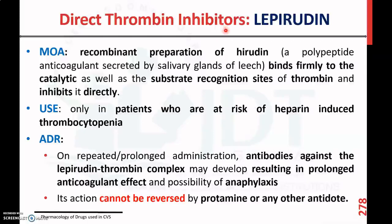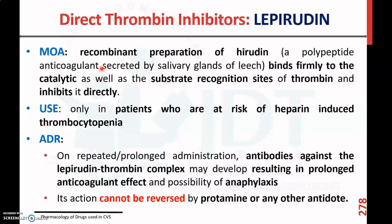Lepirudin is a recombinant preparation of hirudin. Hirudin is an antithrombin substance. These direct thrombin inhibitors bind firmly to both the catalytic site and the substrate recognition site of thrombin and directly inhibit it, producing an anticoagulant action.